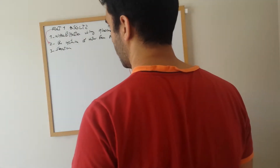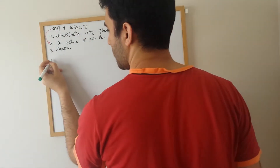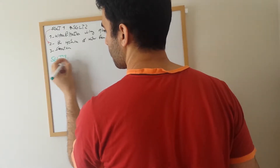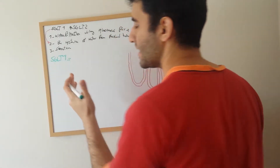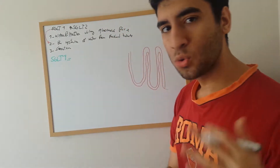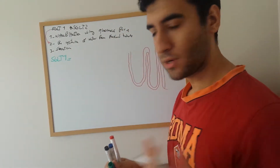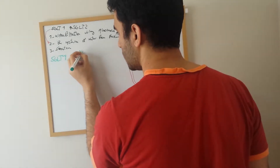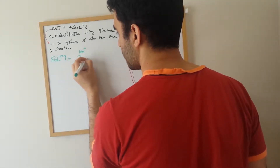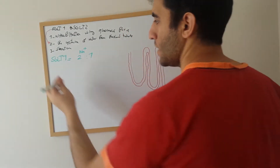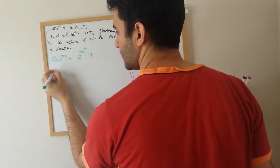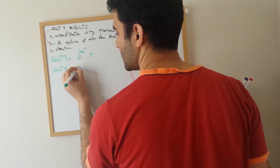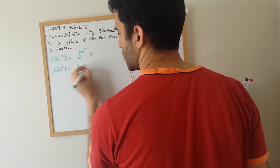SGLT2 has a two-to-one ratio — two sodium to one glucose — while SGLT1 has a one-to-one ratio of sodium to glucose.